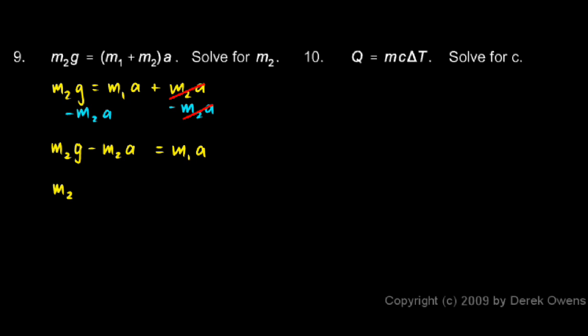The left side becomes m₂ times g minus a. You can see that if I redistributed this m₂, I would just have that. So I've factored out the m₂ on the left, and I have m₁a on the right. And now to solve for m₂, I just divide both sides by g minus a.